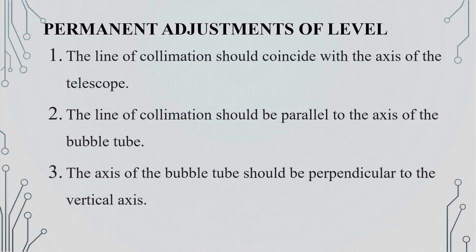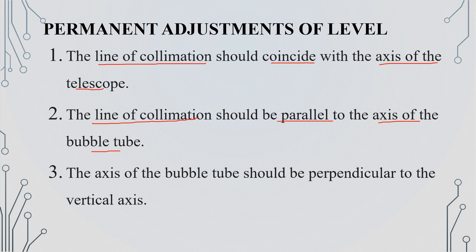Next, we are going to do the permanent adjustments of the level. The first adjustment is the line of collimation — we coincide the axis of the telescope. The second adjustment ensures the axis of the bubble tube is parallel to the line of collimation. The third adjustment ensures the axis of the bubble tube is perpendicular to the vertical axis.